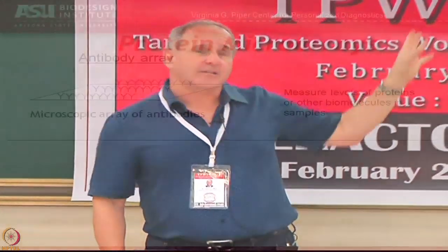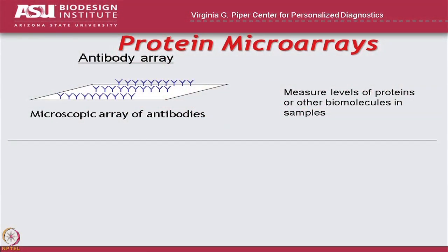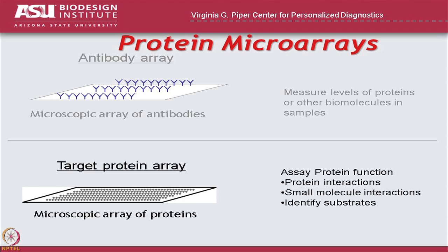There are two kinds of protein arrays. The first kind are antibody arrays, where you print antibodies on a microscope slide that recognize different proteins, then probe a sample to capture proteins and measure their levels. The protein arrays I'm going to talk about are called target protein arrays, and the goal is to look at the proteins themselves — what do they do, who do they interact with, how do they fold, what is their function? On these slides, each different spot represents a different protein on the array.